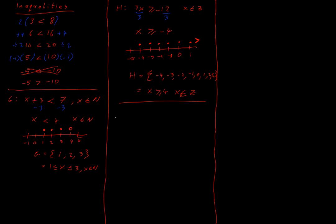If I ask what g intersection h looks like — intersection means what's common to both, where things cross. What elements are shared between g and h? Well, 1, 2, and 3 are shared between g and h. Or we could write it as: x is greater than or equal to 1 and less than or equal to 3, where x is an element of ℕ. We need to be careful to write that x is an element of ℕ because we don't have fractions involved here.